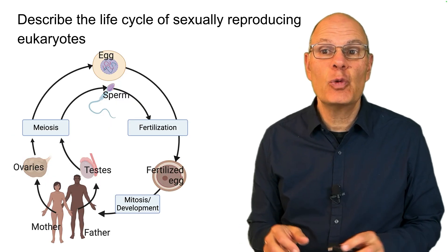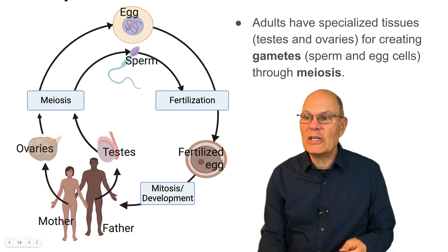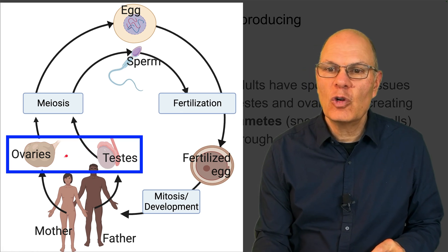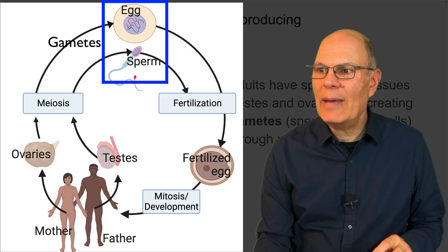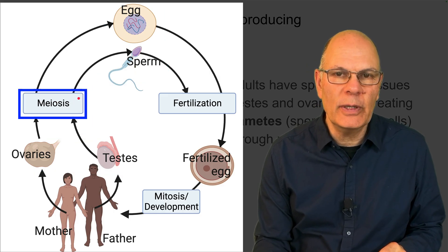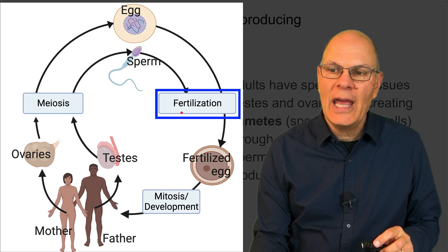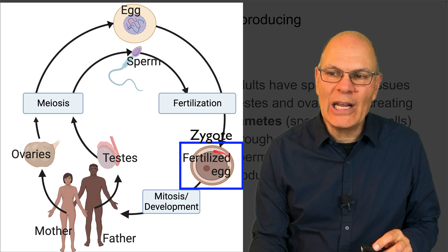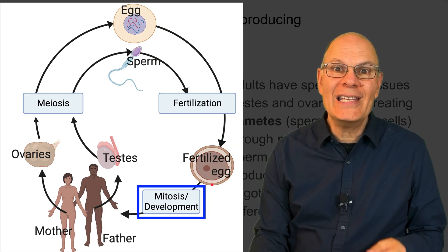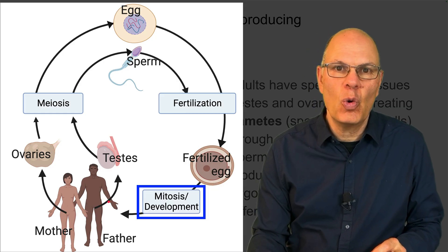Describe the life cycle of sexually reproducing eukaryotes. In eukaryotes, adults have specialized tissues — testes and ovaries — for creating gametes. Gametes are sperm and egg cells, produced through meiosis. The sperm fertilizes the egg and produces a zygote, or fertilized egg. That zygote then divides and develops, and the tissues differentiate to produce an adult organism.